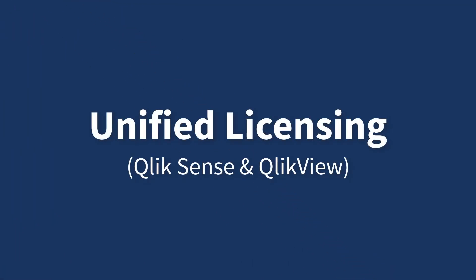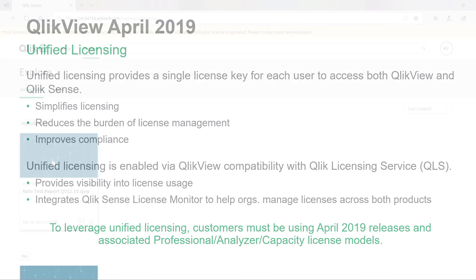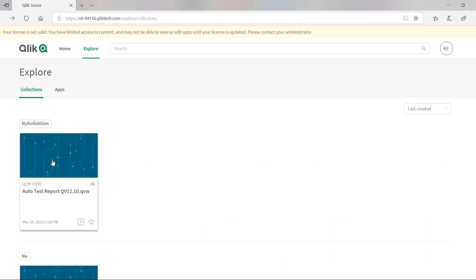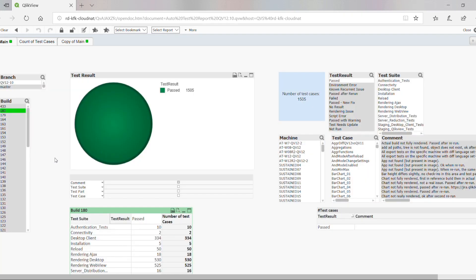Our April 2019 releases of Qlik Sense and QlikView introduce unified licensing to Qlik customers that have adopted QlikView and Qlik Sense dual-use licensing or are using both products. A Qlik user can now utilize a single license key to unlock both QlikView and Qlik Sense, simplifying backend license management. This release also allows you to link Qlik Sense Enterprise on Cloud Services and Qlik Sense Enterprise on Kubernetes.